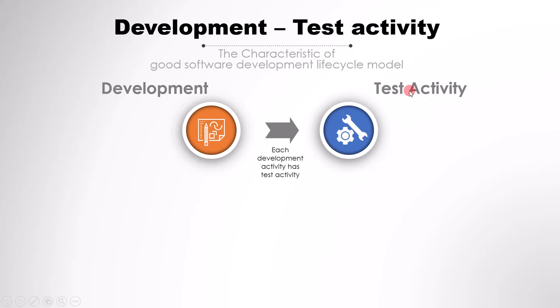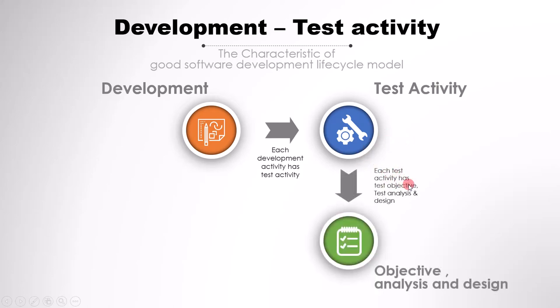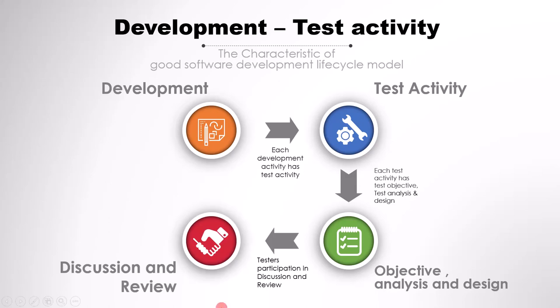Suppose you have a development model — for that model, you should have a test activity. Each development activity should have a corresponding test activity. Each test activity must have an objective, analysis, and design. Whenever you are performing tests, you need to have an objective, and in order to achieve that objective, you need an analysis and design stage. Since testing is not done in isolation, testers should get an opportunity to participate in discussions, reviews, and meetings.